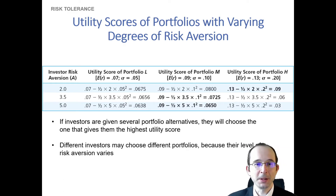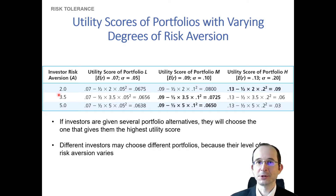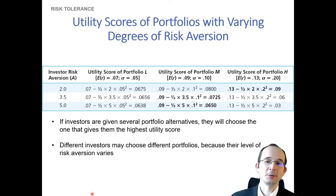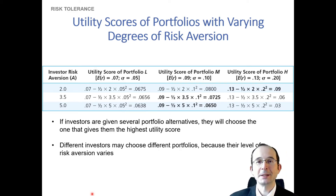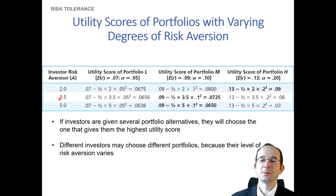Let's calculate the actual utility scores for three different investors: one with a level of risk aversion of 2, one of 3.5, and one of 5. You might be wondering what these levels of risk aversion actually mean. Just like utility scores, these risk aversion coefficients are relative — they don't mean anything in the absolute. Essentially this is just a way to say that one investor is less risk averse than another. The higher the A, the more risk averse the investor.